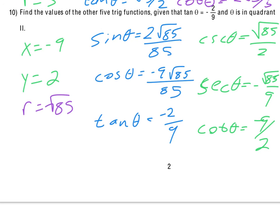Two additional questions will be added: finding the six trig function values for quadrantal angles — specifically 0 degrees, 90 degrees, 180 degrees, or 270 degrees.